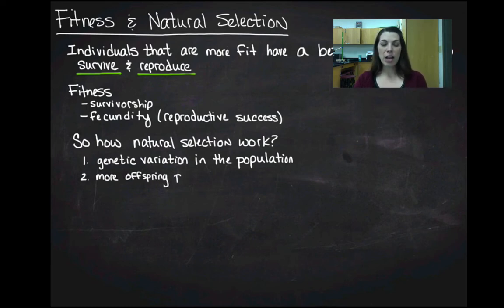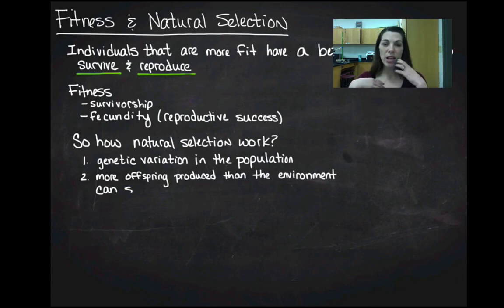The next thing you need to have for natural selection to work is you need to have more offspring actually being produced than the environment can support. So my environment has a certain carrying capacity. There's more offspring being born into that ecosystem than can possibly survive in that ecosystem. And then what you're going to see is that the organisms that are best suited for their environment are going to be the ones that are the most likely to survive. And that's really what we mean by survival of the fittest.